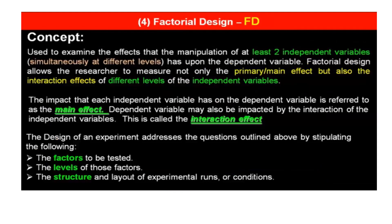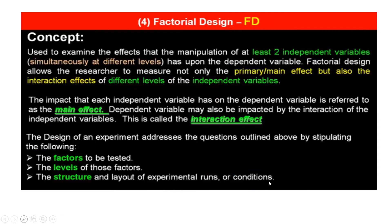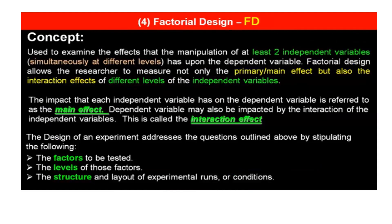Next is factorial design. It is used to examine the effect that the manipulation of at least two independent variables simultaneously at different levels has upon the dependent variable. Factorial design allows the researcher to measure not only the primary or main effect but also the interaction effects of different levels of the independent variables.